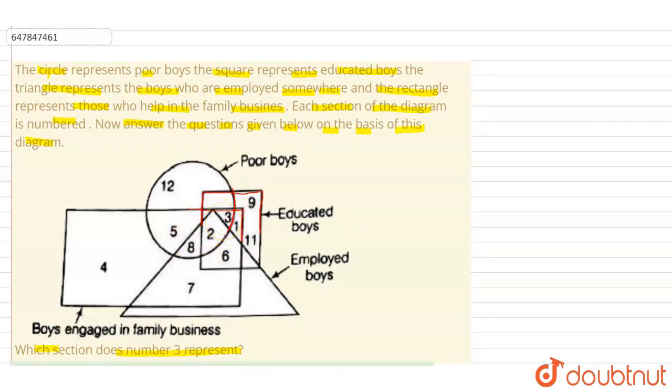The number 3 represents educated poor boys who help in family business. See, circle represents poor boys. What are educated boys? Educated poor boys. And what are they doing? They help with family business. Family business is shown by the rectangle.